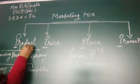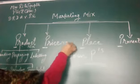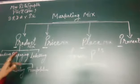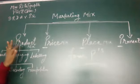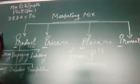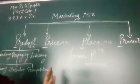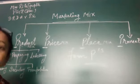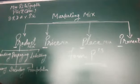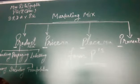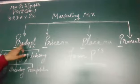All these are known as mix — product mix, price mix, place mix, and promotion mix. In product mix, you have to take all decisions related to the product. Product is a bundle of utility; it can be tangible or intangible, goods or services. While making the product, we take decisions related to quality, shape, color, design, packaging, and labeling. All these decisions come under product mix.